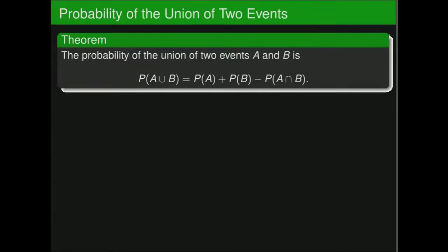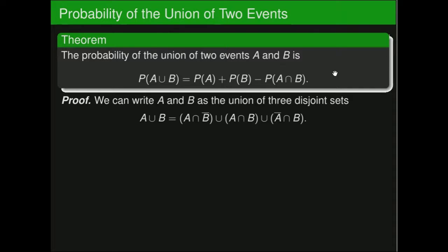Now let's look at the probability of the union of two events, where A and B don't necessarily have to be mutually exclusive. The formula is: P(A ∪ B) = P(A) + P(B) − P(A ∩ B), subtracting the probability that both events occur simultaneously. To prove this, we begin by writing A ∪ B as the union of three disjoint sets: A ∩ B-complement, A ∩ B, and A-complement ∩ B. You can verify this using Venn diagrams.